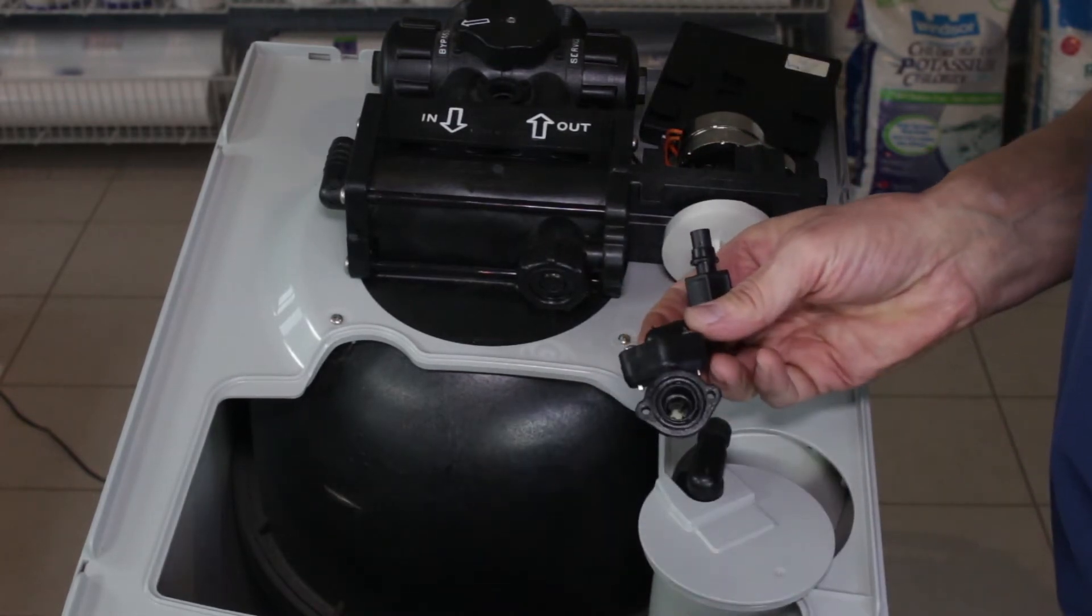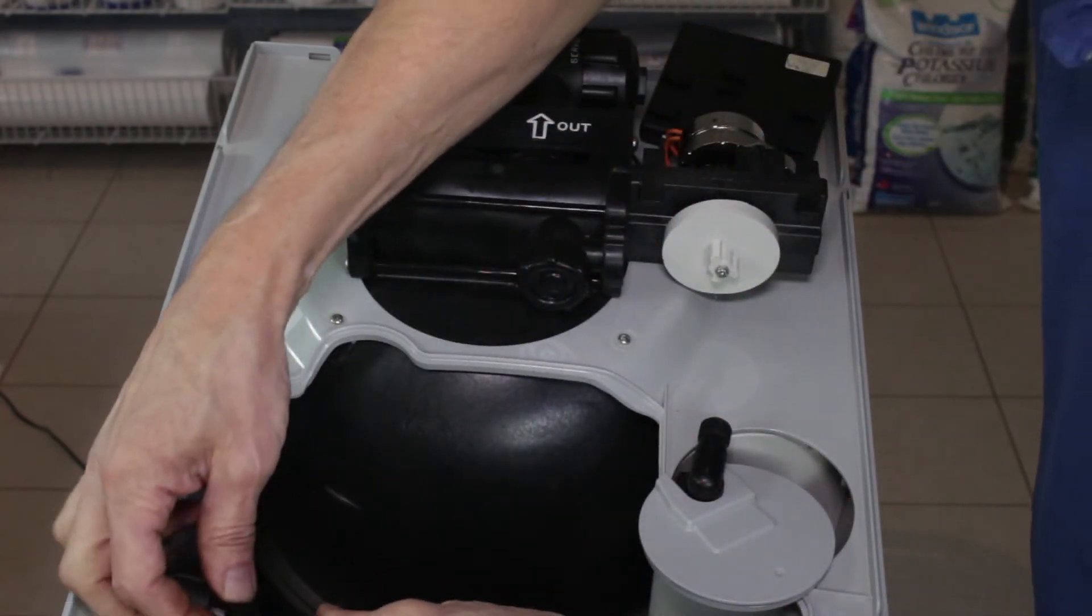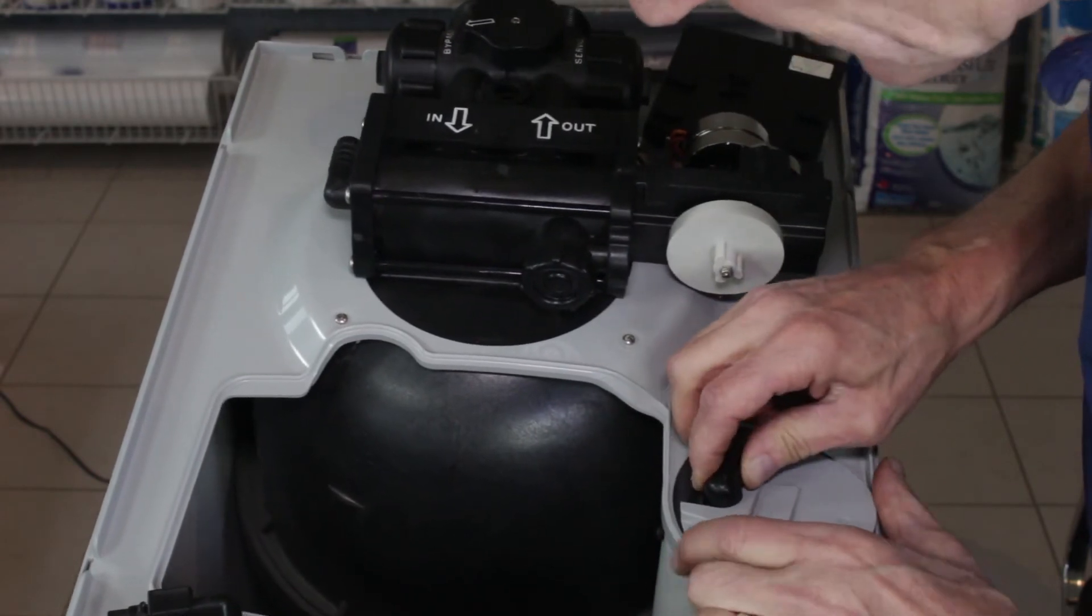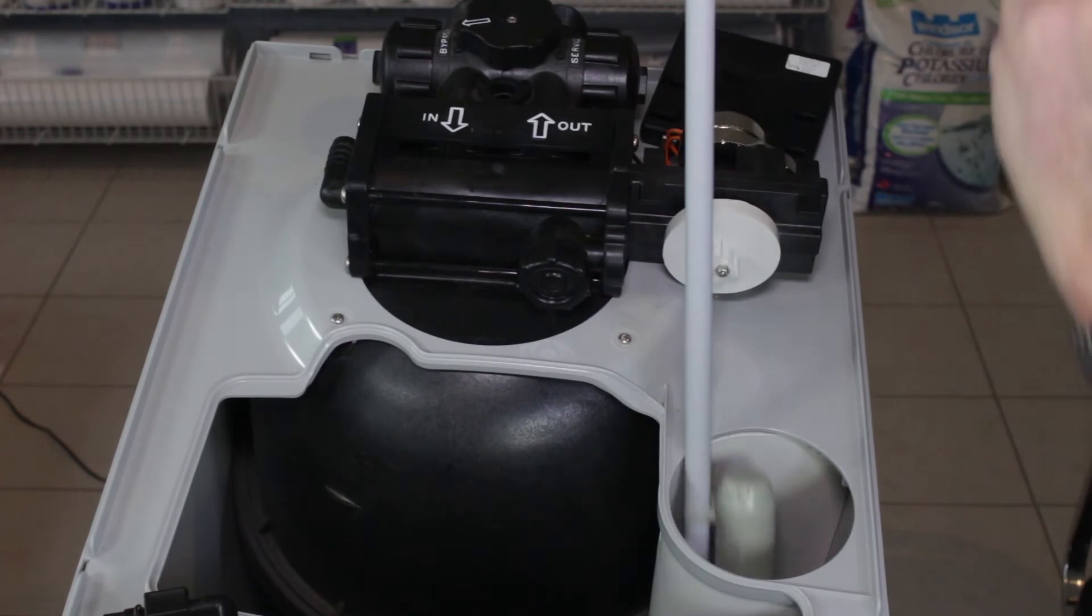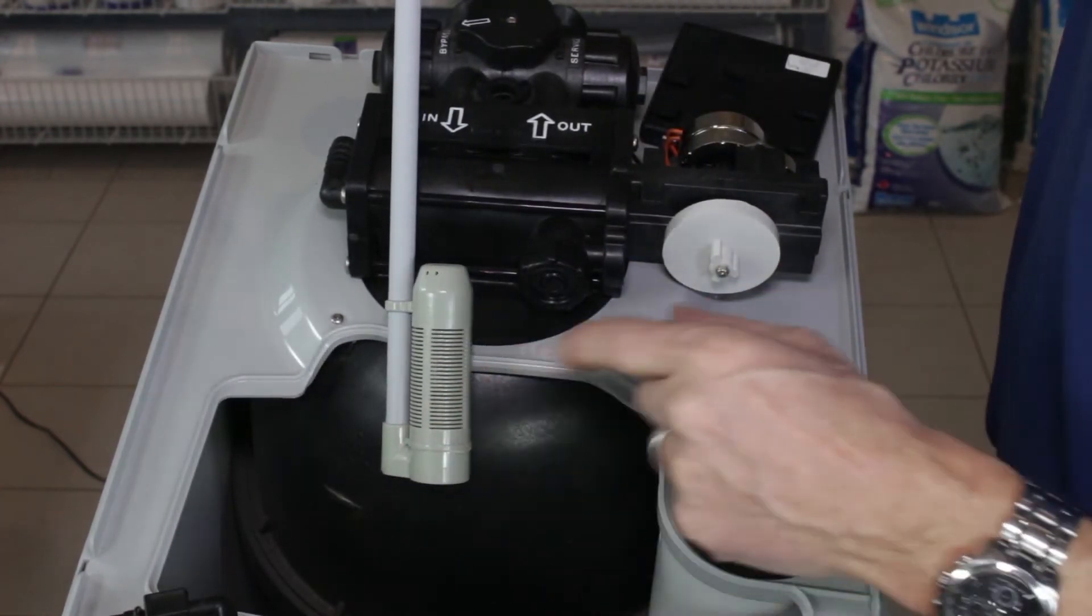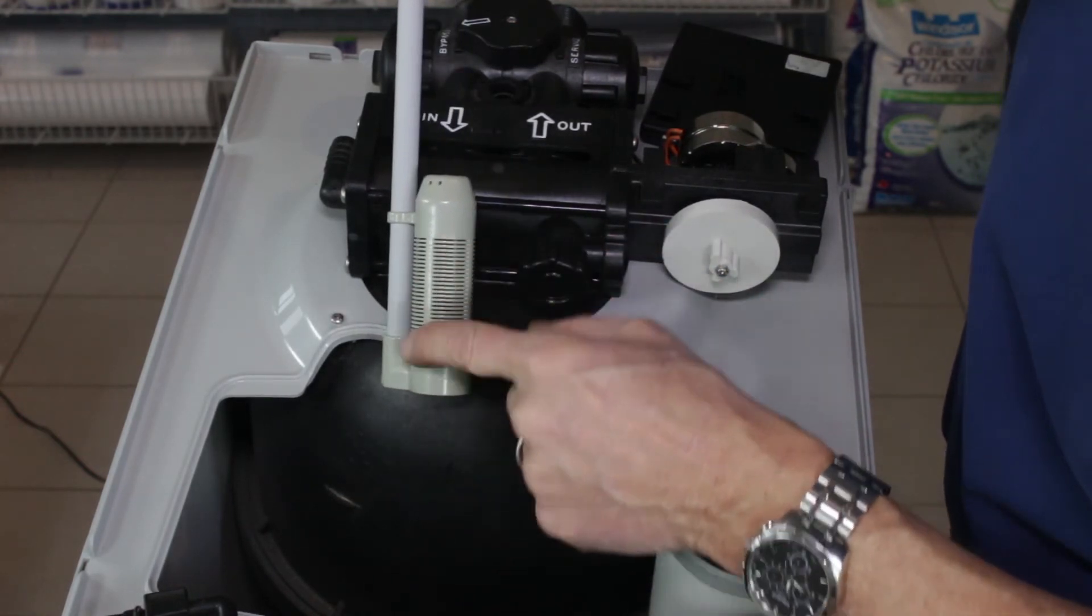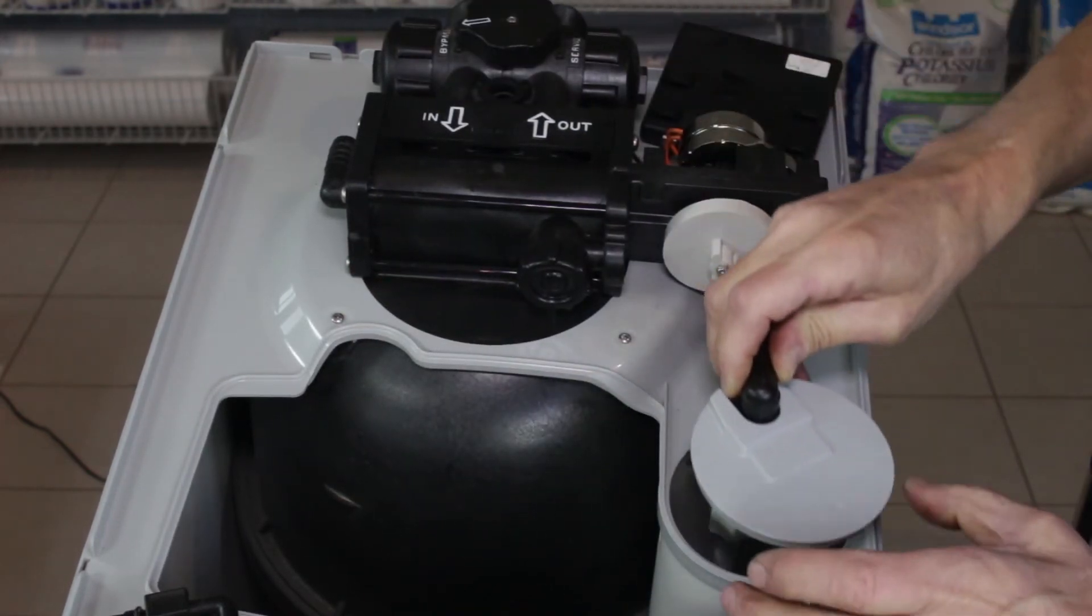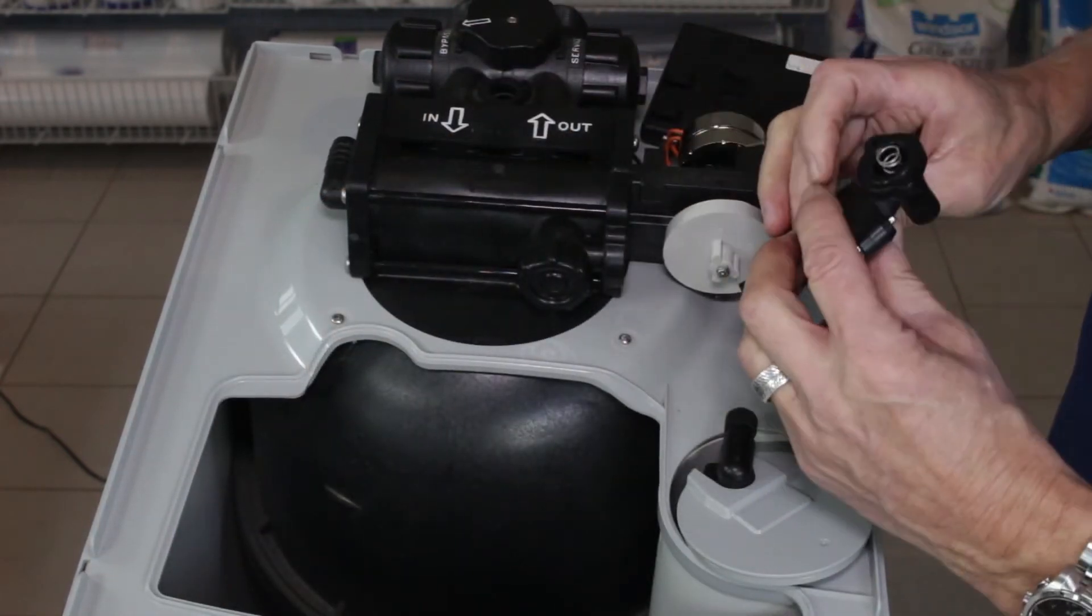Then we're going to put the piston back inside here. Now before we reassemble this, what we would do at this point is pull out the float and wash all this out, because like I say, if there was some debris that got inside and that may have caused an issue with the brine line flow control, it may very well be inside here too. So it's a good idea to flush all this out at this point, and then we can look at putting it all back together.